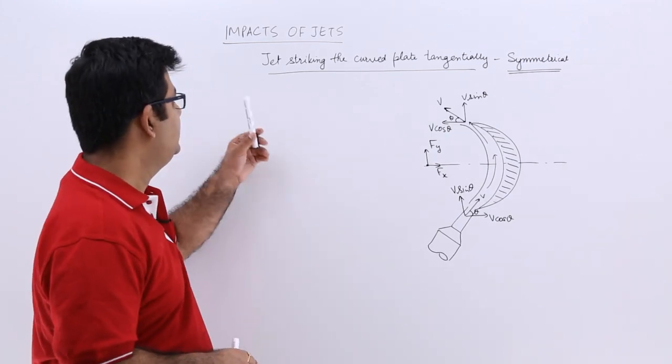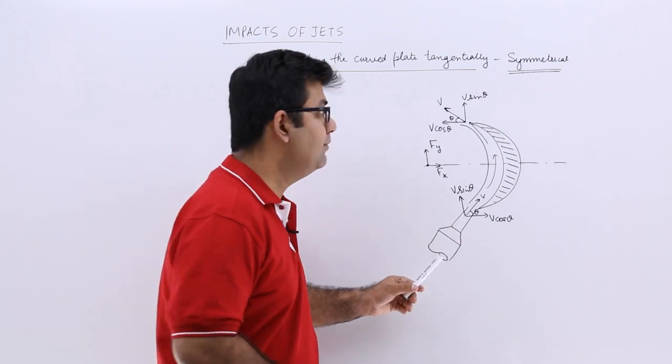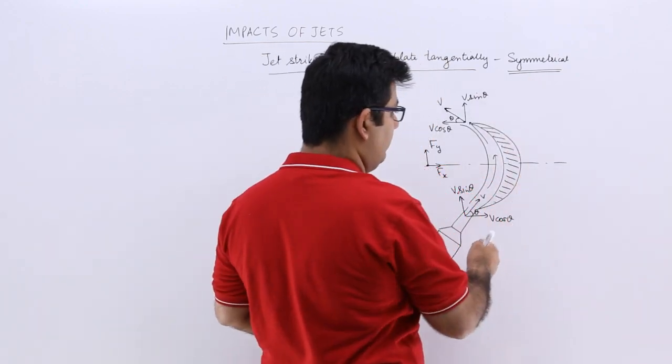Now let's talk about the jet which is striking the plate tangentially like this, and the plate is symmetrical. It's a curved plate but it is symmetrical.